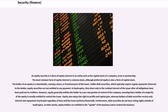In bankruptcy, equity holders share only in the residual interest of the issuer after all obligations have been paid out to creditors. However, equity generally entitles the holder to a pro-rata portion of control of the company, meaning that a holder of a majority of the equity is usually entitled to control the issuer. Equity also enjoys the right to profits and capital gain, whereas holders of debt securities receive only interest and repayment of principal regardless of how well the issuer performs financially. Furthermore, debt securities do not have voting rights outside of bankruptcy. In other words, equity holders are entitled to the upside of the business and to control the business.